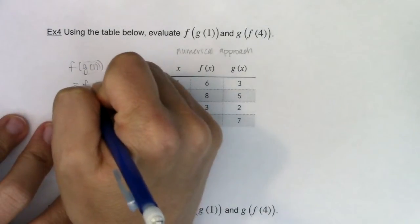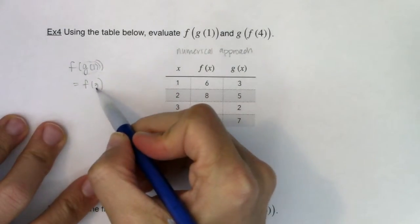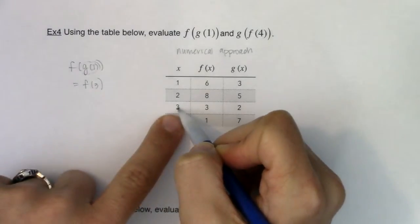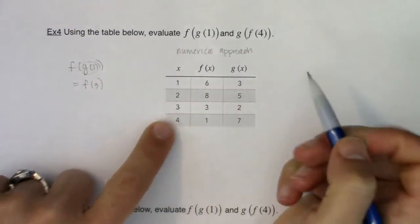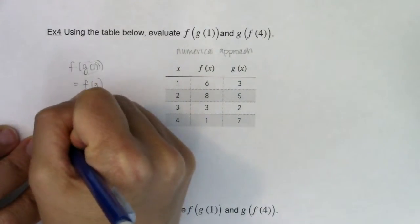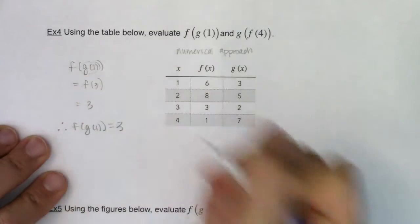So this will ultimately turn into f of 3. Okay now my new x value is 3. Let me track or head down to this row when x is 3 and then the f value is also 3. So in this case f of g of 1 is equal to 3.